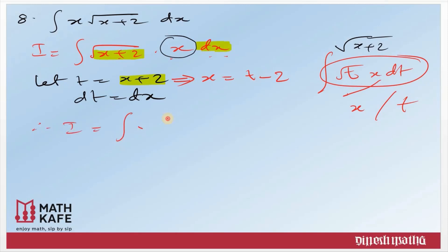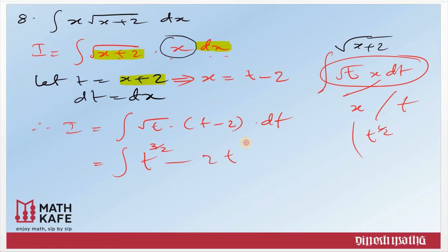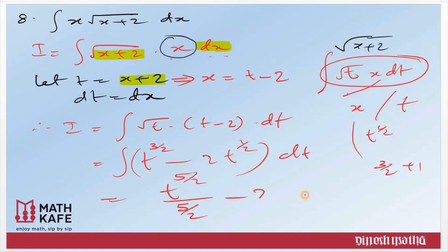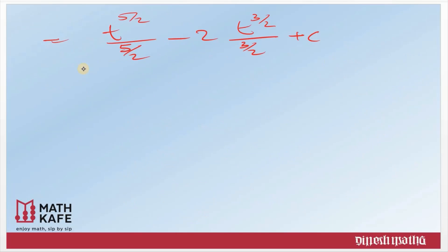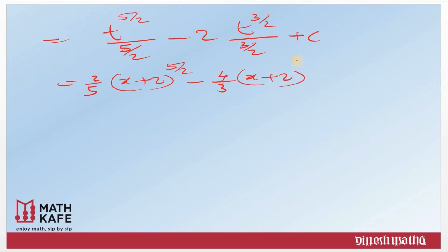We write I = ∫√t · (t − 2) dt. Open the bracket and separate terms: √t = t^(1/2), so t^(1/2)·t = t^(3/2) and t^(1/2)·(−2) = −2t^(1/2). Integrating: t^(3/2+1)/(3/2+1) − 2·t^(1/2+1)/(1/2+1) + c = t^(5/2)/(5/2) − 2·t^(3/2)/(3/2) + c. Simplifying and replacing t = x+2: I = (2/5)(x+2)^(5/2) − (4/3)(x+2)^(3/2) + c.